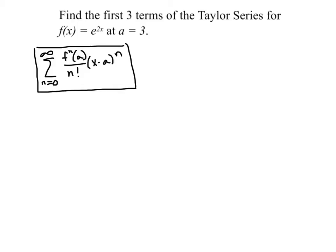So we need to list some derivatives. Now remember, the first thing, the 0 derivative, is just the function. So the function is e to the 2x. f prime would be 2e to the 2x. f double prime would be 4e to the 2x.